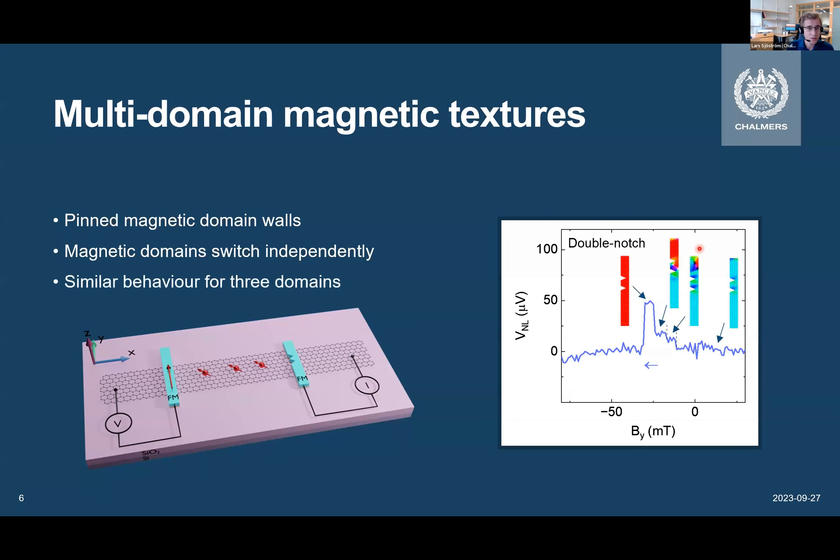And if we go back to simulations, we can see that, again, this is behaving as we're expecting. First, this part is switching, then this part is switching, and then the rest is switching. So, in principle, we can expand this to have as many independently switching magnetic domains as we want.